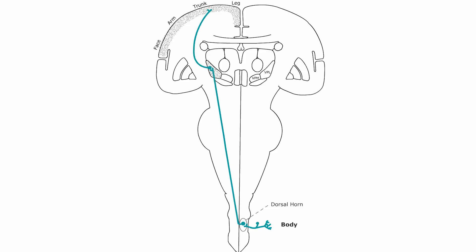The third neuron, located in that nucleus of the thalamus, ascends through the internal capsule to terminate in the postcentral gyrus, which is primary somatosensory cortex.